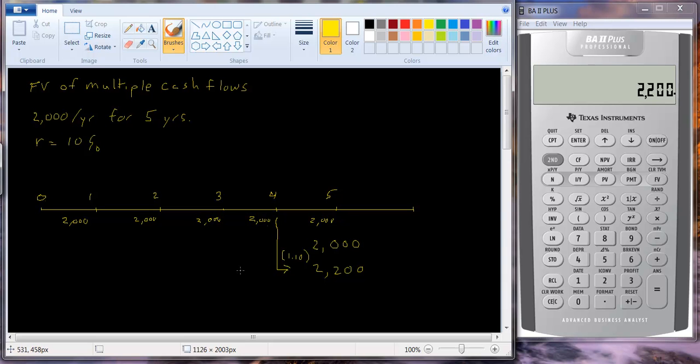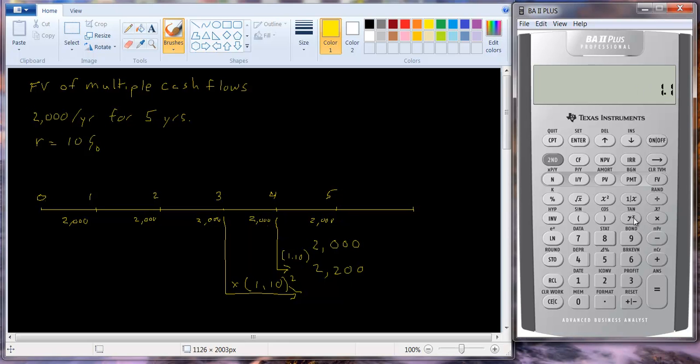How about in year three? In year three, this is going to compound one, two periods. So the $2,000 in year three will grow by an amount times 1.10 squared. So let's do that. 1.1, y to the x 2, that's how we raise it to a power. Multiply it by the $2,000 and we get $2,420.